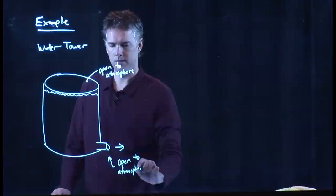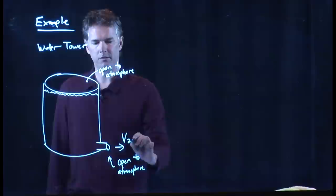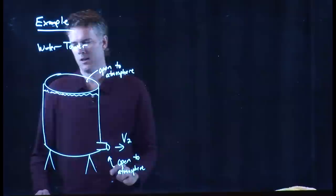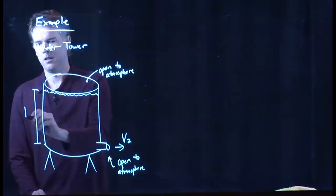And what we want to calculate is, what is this V2? What is the speed of the water shooting out the bottom of the tower? Okay, we'll put some legs on our tower, and we'll say that this is height H. How far is the top of the water from that spigot?